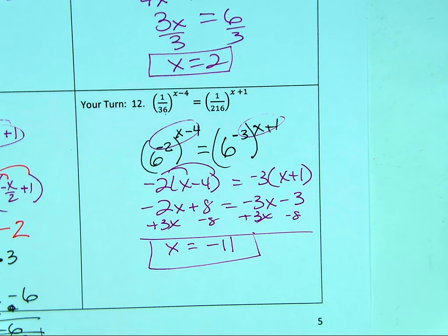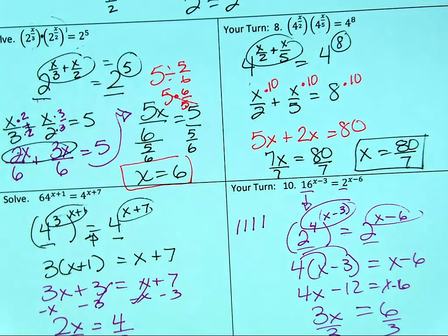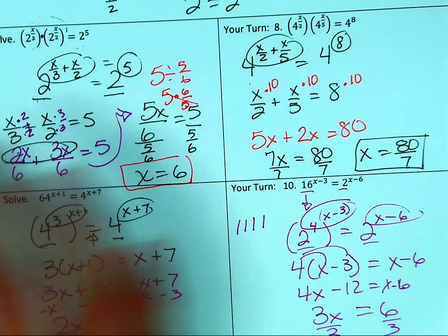Those are the examples for today. Go really slow: make sure the bases are the same — you cannot go any further until they are. Then set the exponents equal to each other. Remember negative exponents, remember to add exponents when multiplying. If you don't remember your exponent rules this is going to be tough, so write them down and refer to your notes. Good luck! I'm Squirt, signing out.